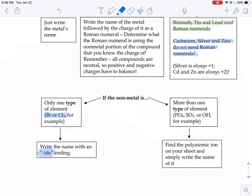If the non-metal portion is made up of more than one type of element, so you see something that looks like this: PO4, SO3, OH, more than one type, then you need to find that ion on your ion sheet and simply write the name of it.